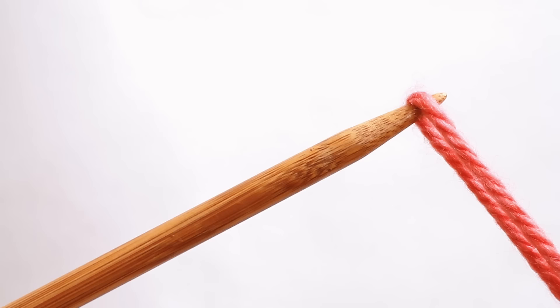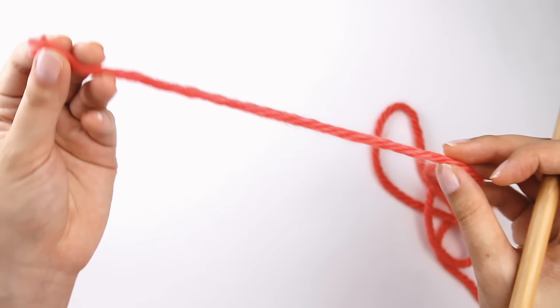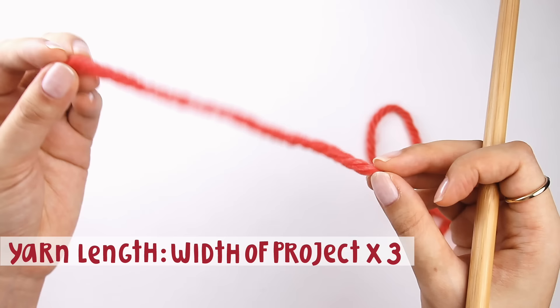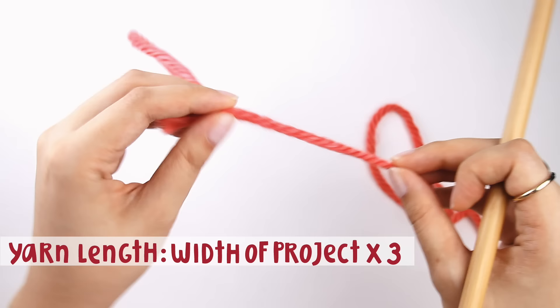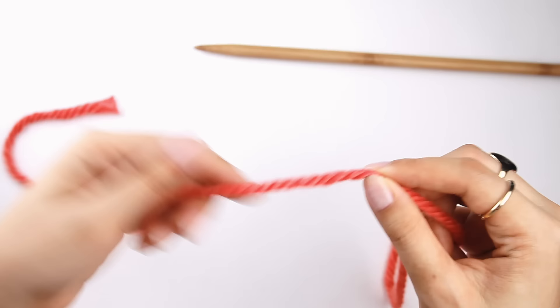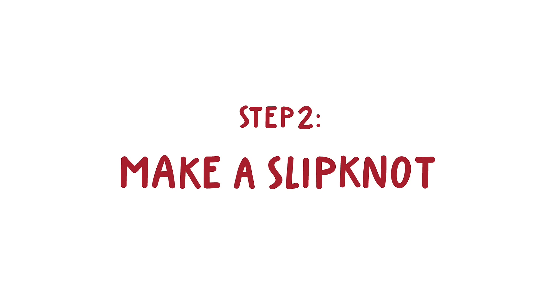Now let's get on to casting on. First we need to determine how much yarn we need, and this is pretty easy. If you know you want to knit a scarf that's like 5 inches wide, then you'll just multiply that by 3. So that would be 15 inches. Let's just say I'm going to knit a scarf that's 5 inches wide. I'm going to eyeball about 15 inches of yarn, and that's where I'm going to start my cast on. So let's say that's like here, just for the sake of making things easier. Once I've figured out my point where I want my cast on to be, then I'm going to make a slipknot.